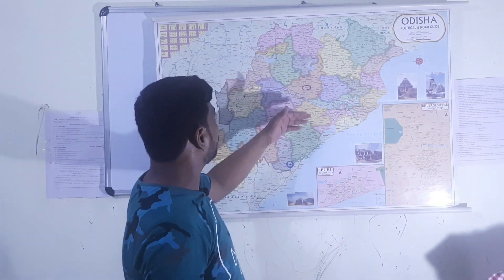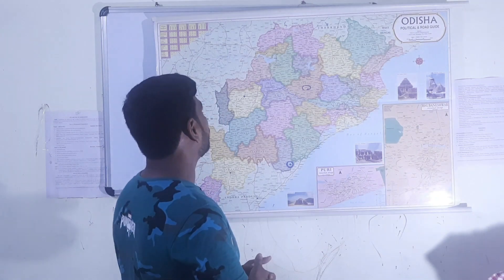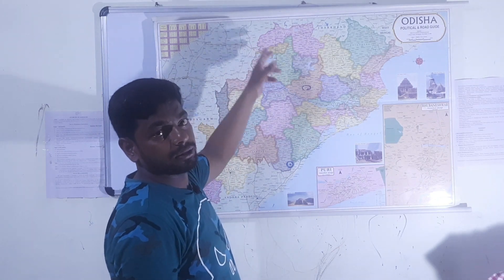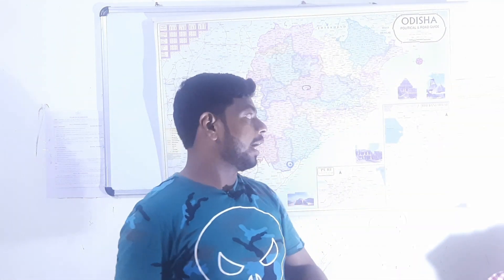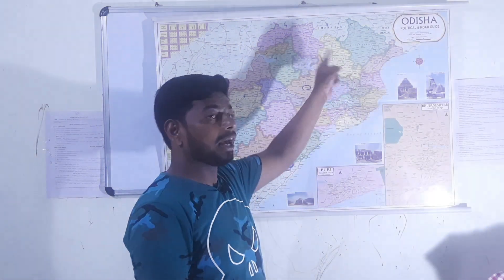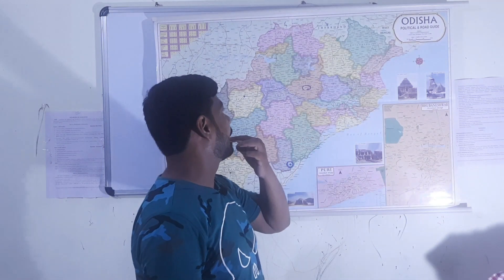Mahanadi originates from the Bastar Plateau; we will discuss it in detail when covering India's river system. Another river is Budha Balanga, which originates from Mayurbhanj within our state. In Mayurbhanj, the Barehipani waterfall — the highest waterfall in our state — is formed, along with the Joranda waterfall nearby.